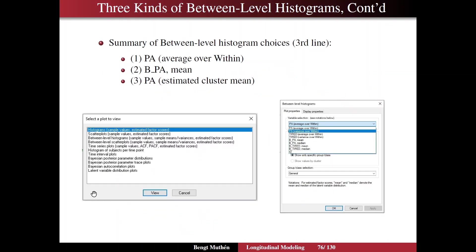And those choices are summarized on slide 76. So here are the three choices. And we are looking at the plot menu between-level histograms, the third line here. And when you click on that, first of all, you see that you have estimated factor scores in there too, because we have the factors option stated in the plot command. When you click on that, the window opens up on the right, where the first line is PA average over within, which is the first option. And the second option is this B underscore PA mean, or you can take the median if you want. The third option is further down here, and you don't see it in this window. So there you have the names and what they represent.